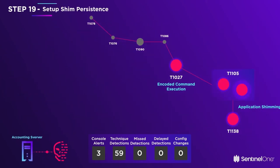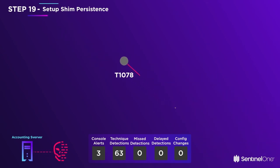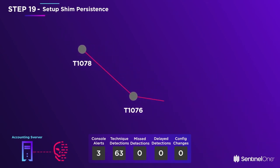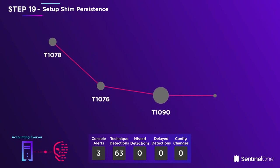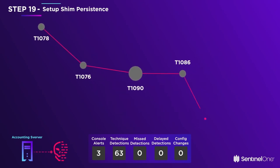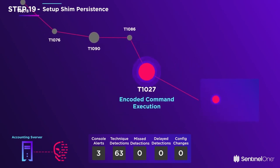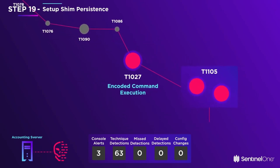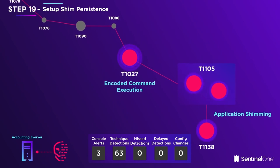Using stolen credentials, the adversary moves from IT admin to the accounting server. He misuses Windows Remote Desktop in an unusual way to proxy communication from his C2 to the accounting server via his IT admin session.